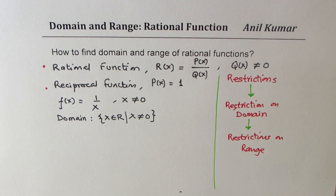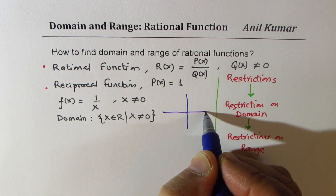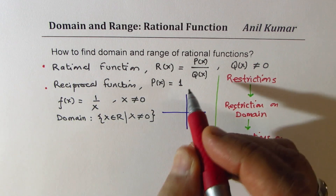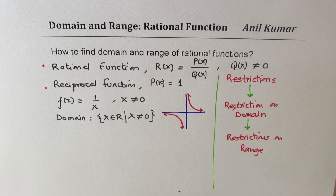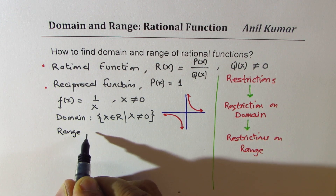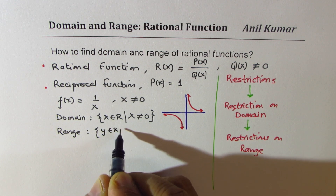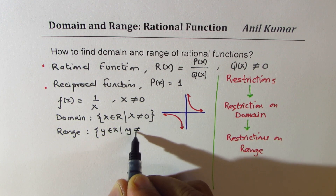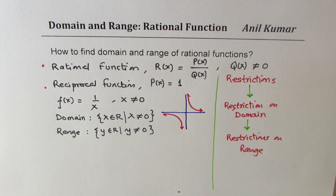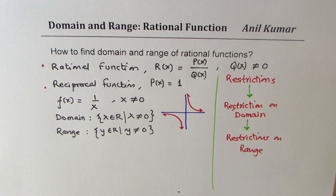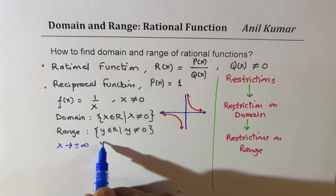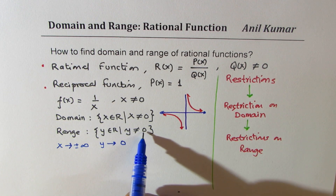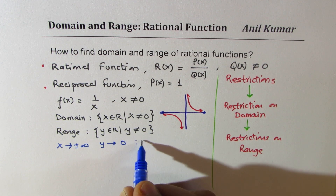If you sketch this particular function, it looks kind of like this. As you can see from the graph, range is also restricted. As far as the range is concerned, the y values could have all possible values except 0. We see that as x approaches positive or negative infinity, y approaches 0 — it is never there, it is approaching. By definition, this is called a horizontal asymptote.